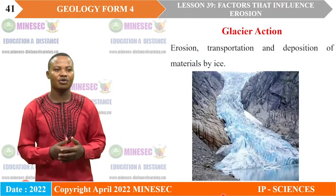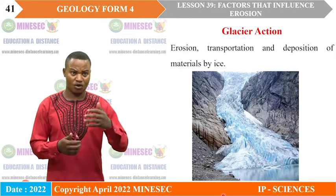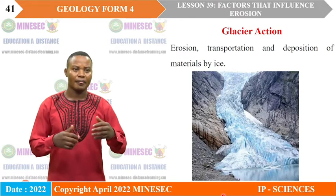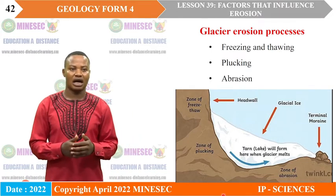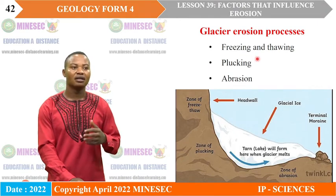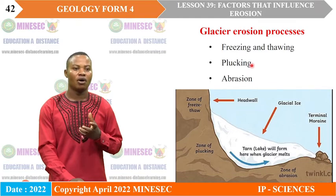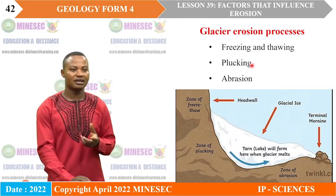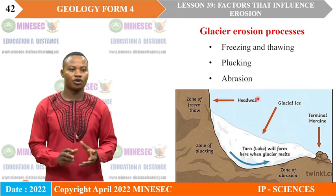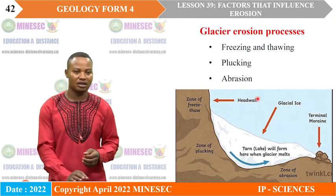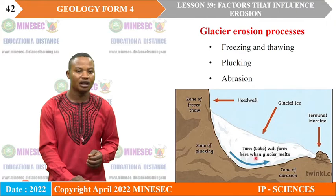Glacier action equally involves erosional, transportational, and depositional processes, and is common in temperate environments. Glacier erodes by three processes: freezing and thawing — where water freezes in cracks of rocks, expanding them and breaking the rock down; plucking — the removal and transportation of rocks by glacial action; and abrasion — where glacier transporting materials scrapes the bottom of the bedrock, removing and transporting materials.